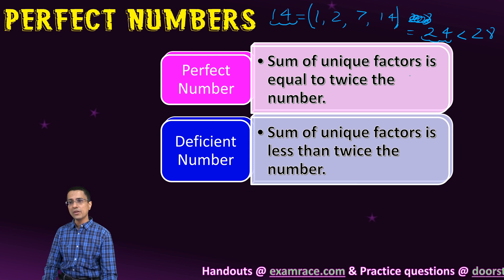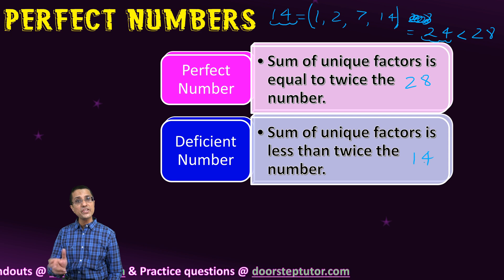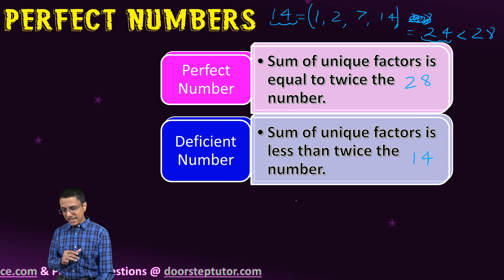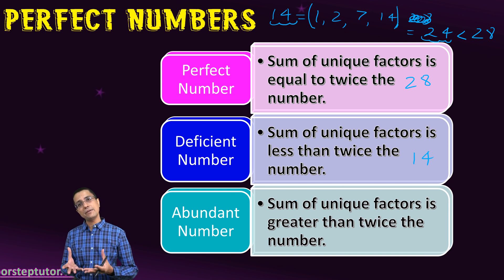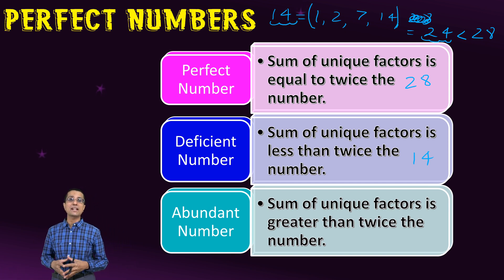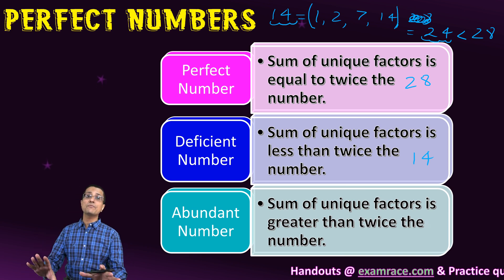The final kind of numbers are abundant numbers. What does that mean? It means that the sum of unique factors is greater than 2 times the number. Those are the abundant numbers.